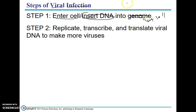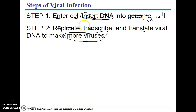Once the DNA is in the host cell, the virus uses the stuff of the host cell — like the ribosomes and DNA polymerase — to replicate, transcribe, and translate their DNA to make more viruses. So they insert their DNA and use all the cell provides: the ribosomes, the tRNA, all of that — to replicate, transcribe, and translate the viral DNA into proteins to make more of themselves.